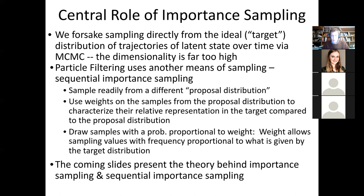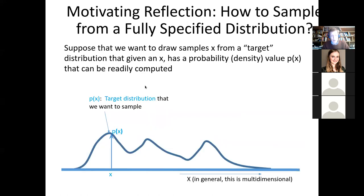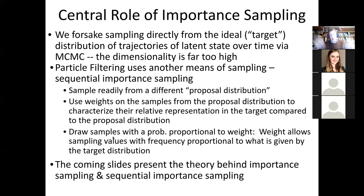We need to understand importance sampling. It turns out it's really easy and practical to use. What we're going to do is use importance sampling to draw from a target distribution using a two-phase operation: we draw first from a proposal distribution, then we assign weights relating the value of the proposal distribution to the value of the target distribution to get a series of weighted samples. Then we draw from them with a probability associated with the weight.